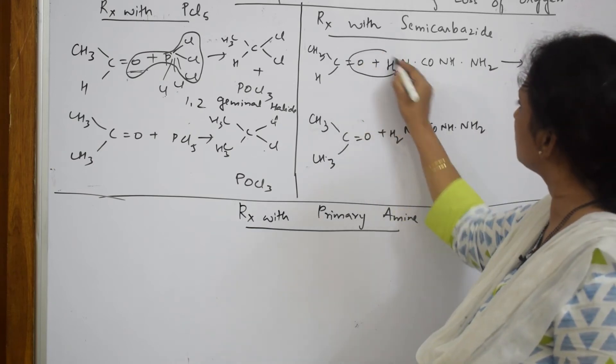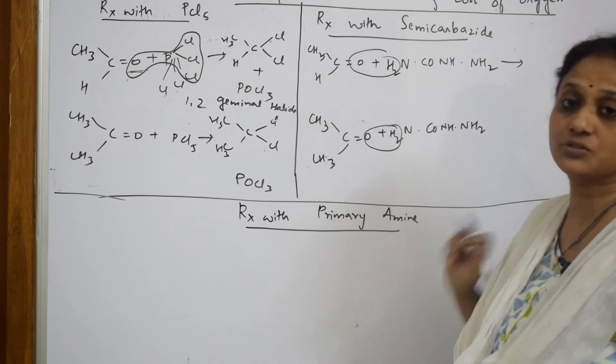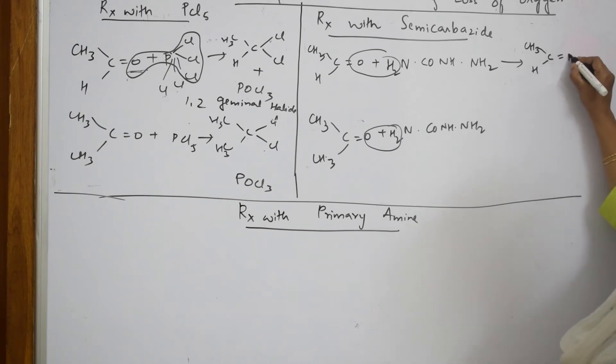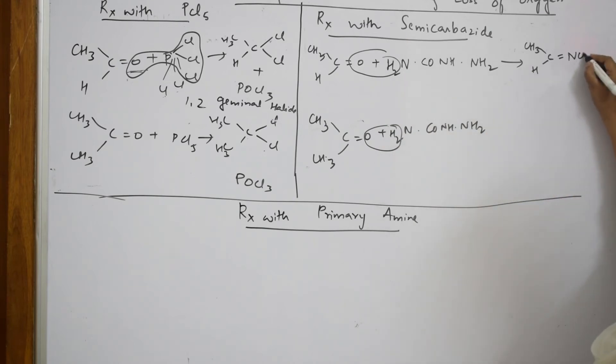As I said, it is going to eliminate water molecule here. It is going to eliminate water molecule and directly attach to the carbon. Double bond is existing, please see that. You have CH3, C, double bond. Now observe: N, water hydrogen is gone, N, CO, NH, NH2. Here also same thing: CH3, CH3, carbon, double bond is still existing, N, CO, NH, NH2.